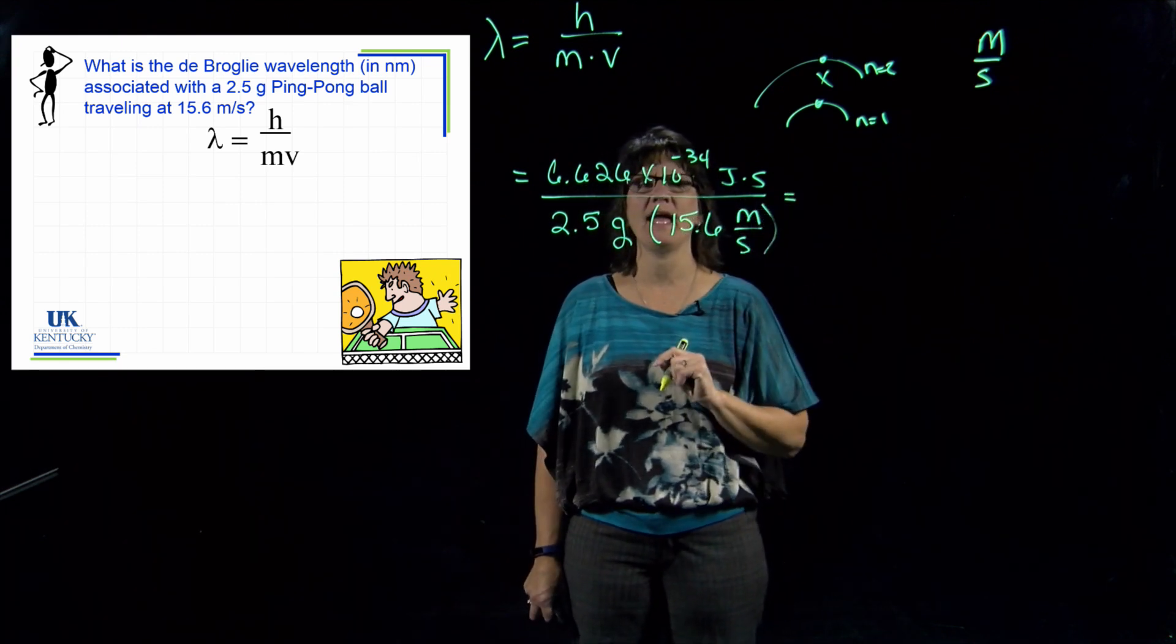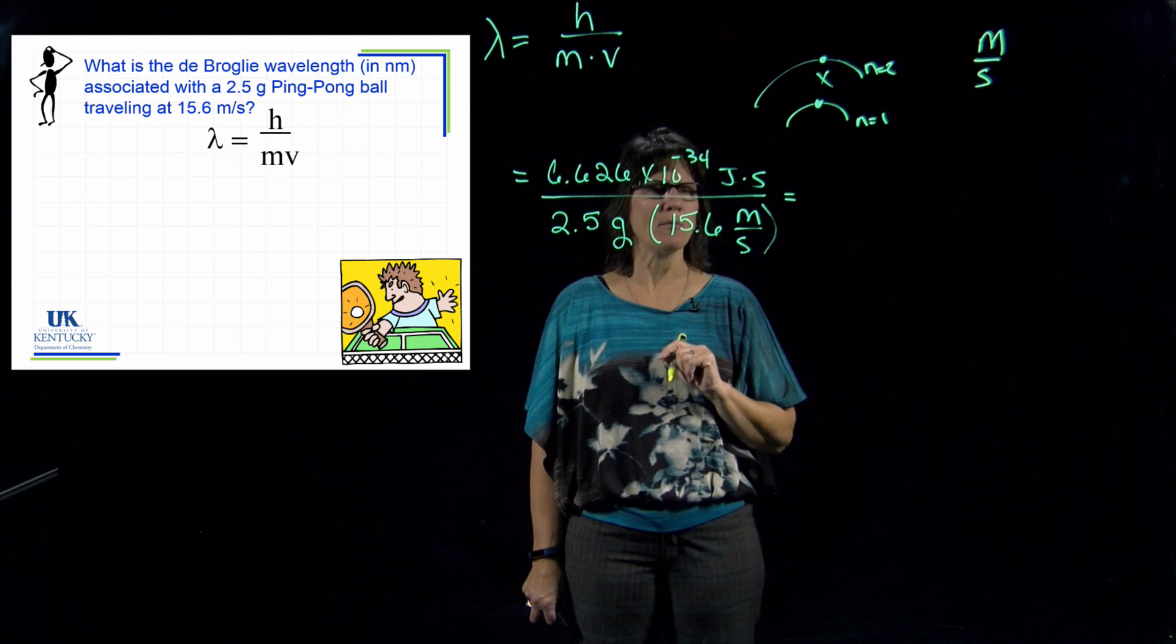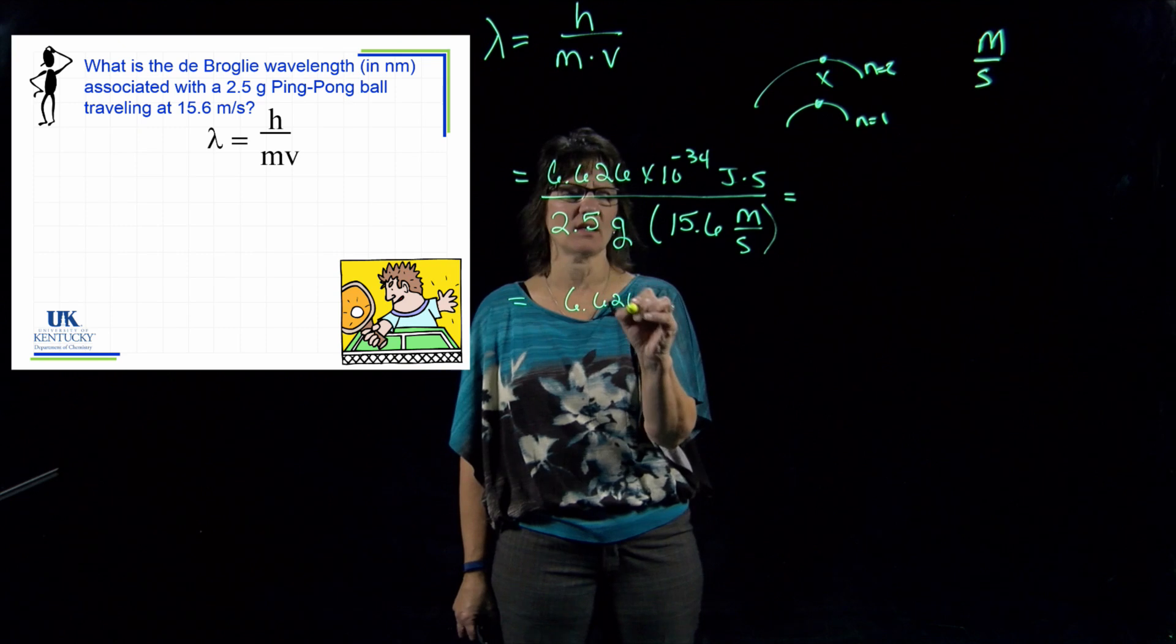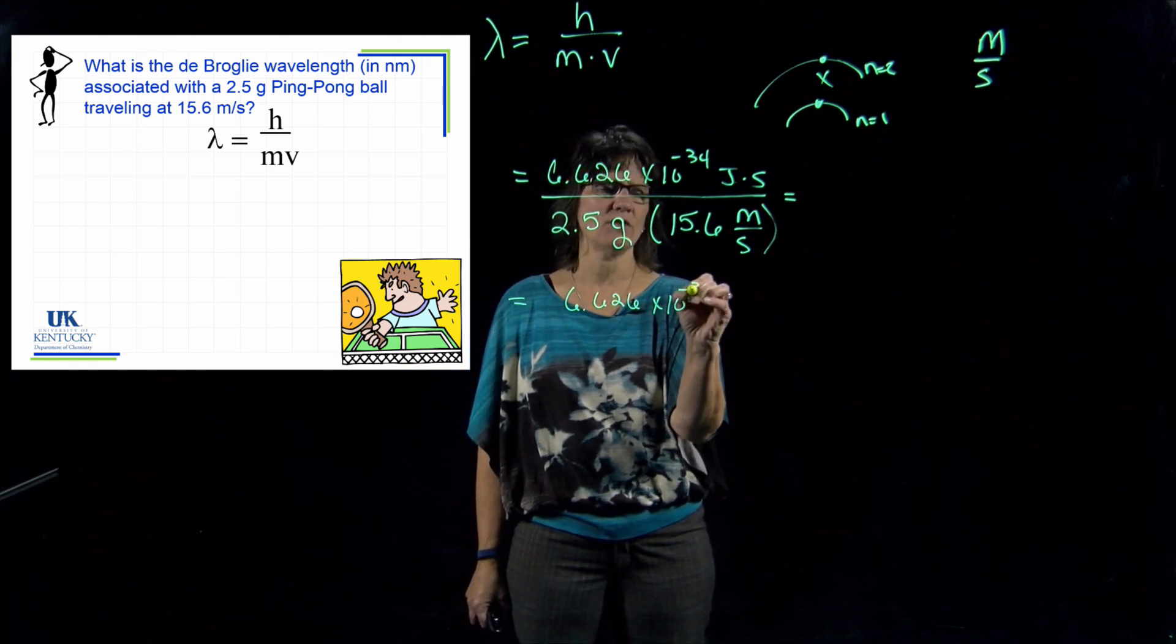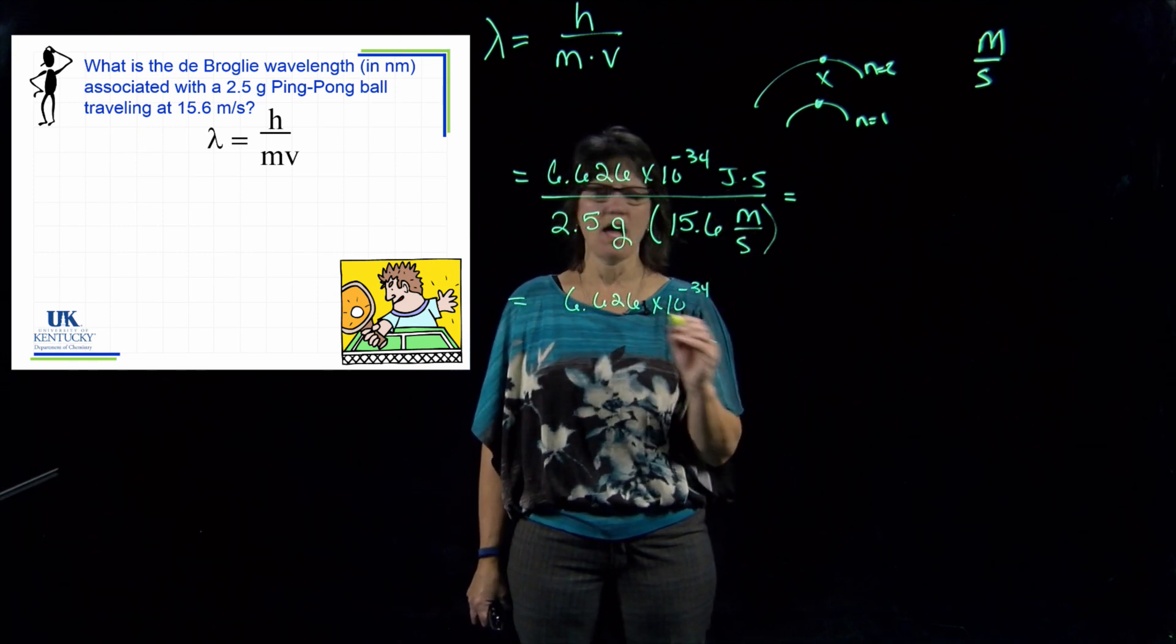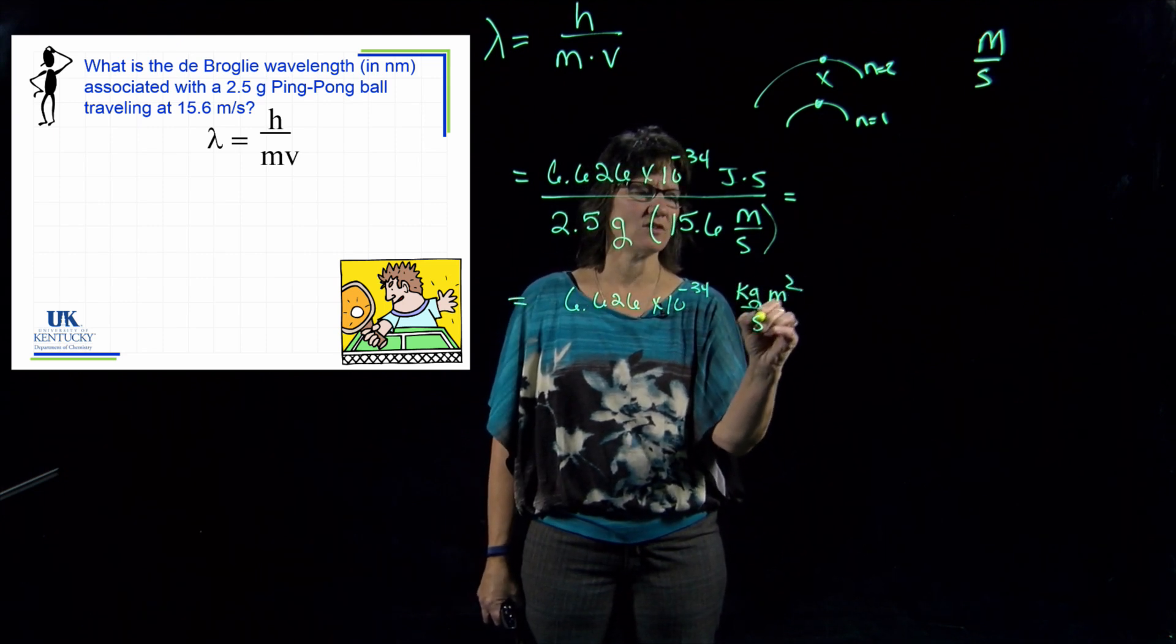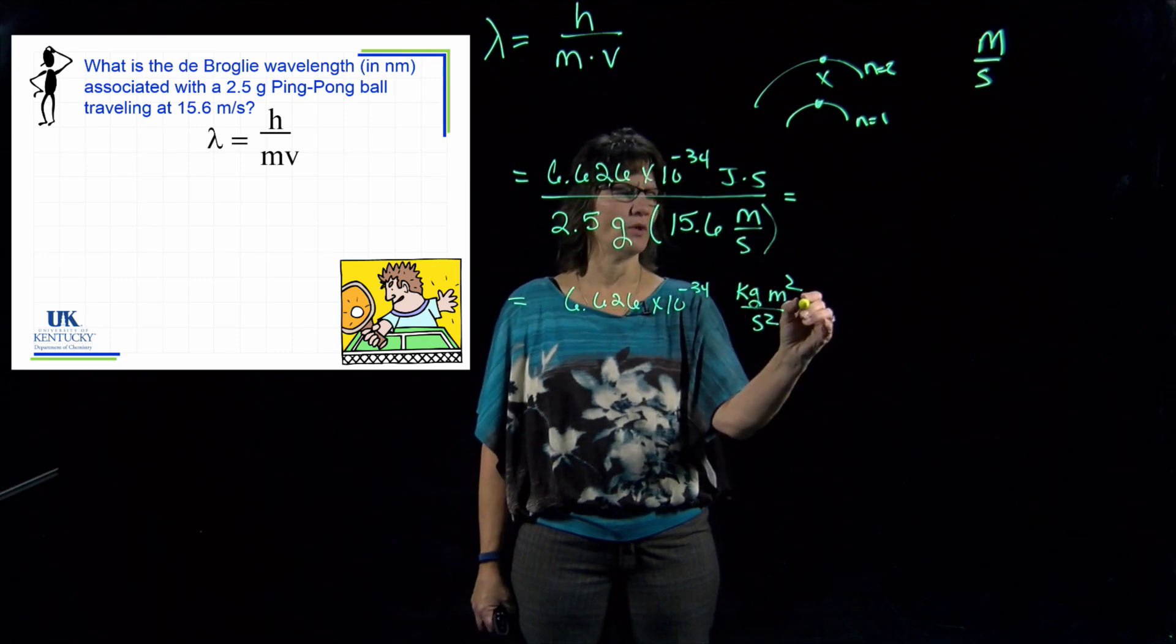So what I'm going to do is actually write these numbers again down here but with the right unit: 6.626 times 10 to the minus 34, and instead of a joule I'm going to replace that with kilograms meters squared per second squared. Now that's all the joules, so I still have the seconds, and now this second can cancel with one of those. But this also reveals another problem: if I have this as 2.5 grams, a gram cannot cancel with a kilogram and we need it to, so I'm going to go ahead and convert my grams to kilograms.